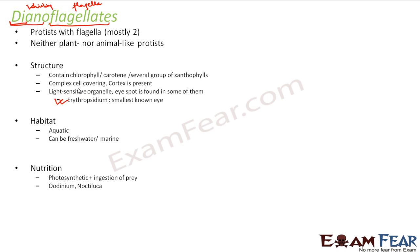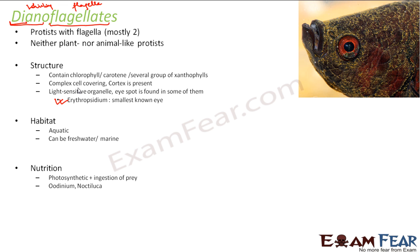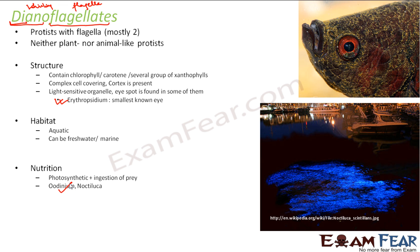Some examples of dinoflagellates: Oodinium — here you can see a fish with yellow spots on its body. Those yellow spots are nothing but Oodinium dinoflagellates, which appear as golden-colored dust over the body of the fish. Noctiluca — you can see bluish-colored bioluminescence on the surface of water. These are dinoflagellates called Noctiluca, which are big enough to feed on fish eggs directly.